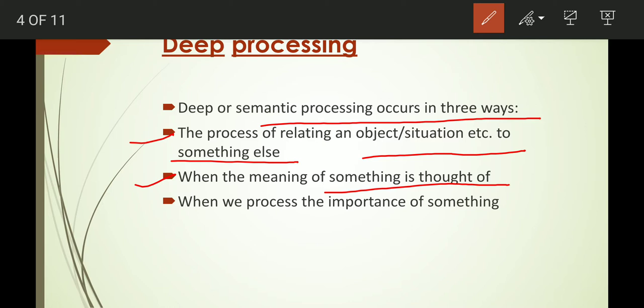The third way is when we process the importance of something. For example, when I explain levels of processing to you, and you realize it is an important topic in psychology from an exam point of view, you understand its importance and try to understand it more deeply. So these are the three basic ways of deep or semantic processing.